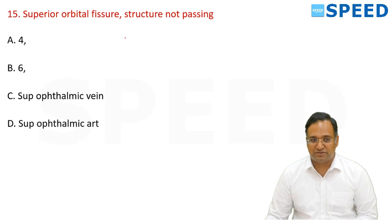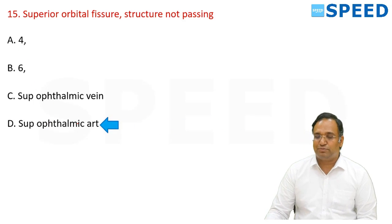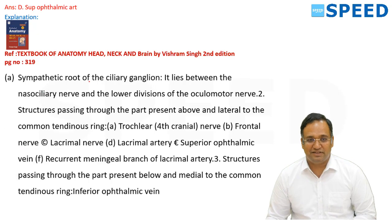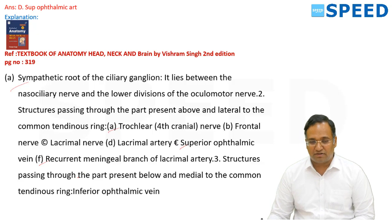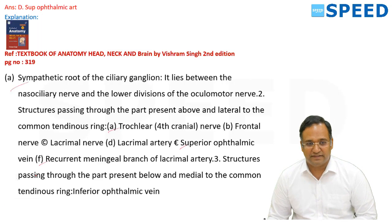Regarding the superior orbital fissure — which structure does not pass through? The 4th nerve, 6th nerve, and superior and inferior ophthalmic veins pass through. Structures passing through include the superior and inferior divisions of the oculomotor nerve, nasociliary nerve, abducens nerve, sympathetic roots, trochlear nerve, and recurrent meningeal branch of the lacrimal artery, and ophthalmic veins. However, the superior ophthalmic artery does not pass through the superior orbital fissure.